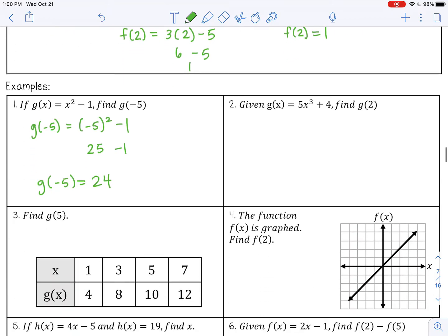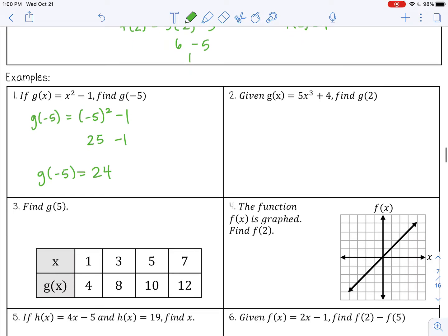Number 2. Given g of x is 5x cubed plus 4, find g of 2. Let's substitute in 2 for x.